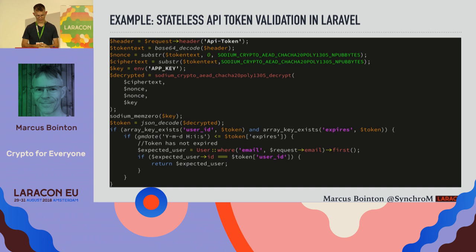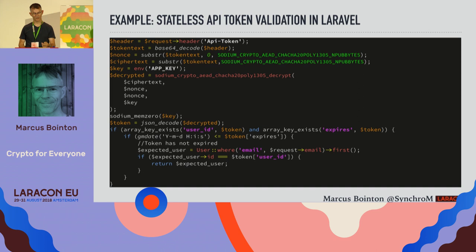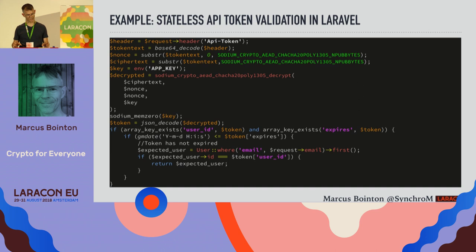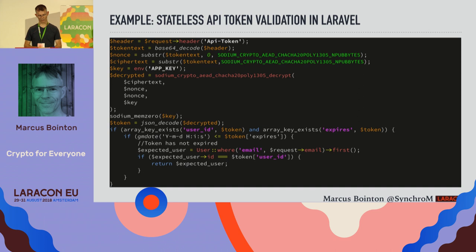As far as performance goes, symmetric ciphers are extremely fast and we're only encrypting a very small item. The only challenge with this approach in a load-balanced cluster is that you need to distribute your key across all nodes, since you don't know which one will receive subsequent requests. But that's a separate problem.